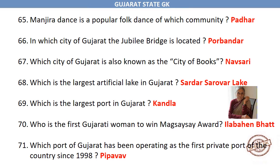In which city of Gujarat is the Jubilee Bridge located? Porbandar. Which city of Gujarat is also known as the City of Books? Navsari. Which is the largest artificial lake in Gujarat? Sardar Sarovar Lake. Which is the largest port in Gujarat? Kandla.